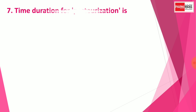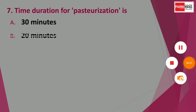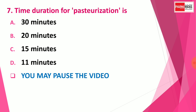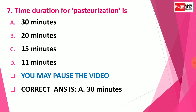Question number 7. Time duration for pasteurization technique is — Option A: 30 minutes, Option B: 20 minutes, Option C: 15 minutes, and Option D: 11 minutes. You may pause the video to think about the correct answer. The correct answer is Option A, 30 minutes. Time duration for pasteurization is 30 minutes, and temperature is 62 to 72°C, as we discussed in the previous question.